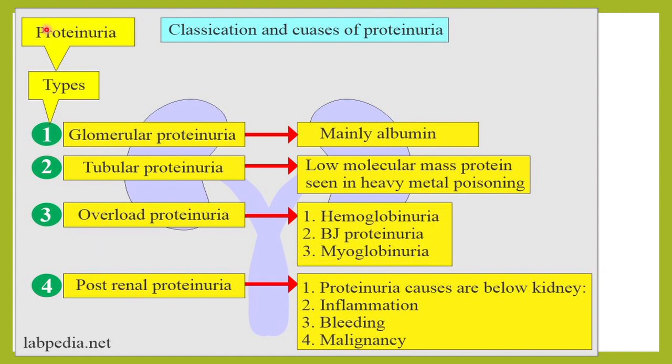So we can classify proteinuria as glomerular proteinuria, tubular proteinuria, overload proteinuria, and post-renal proteinuria.